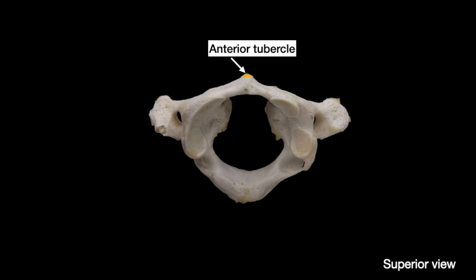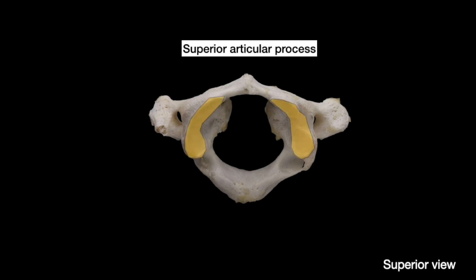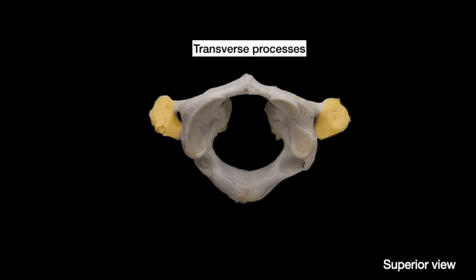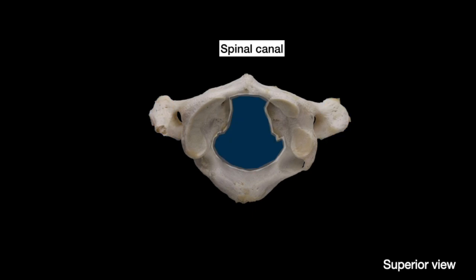The most anterior part of the anterior arch is called the anterior tubercle, and in the posterior arch it is called the posterior tubercle. The superior articular processes, which articulate with the occipital condyles, are also seen at the top of the lateral masses. Lateral to the lateral masses are the transverse foramina where the vertebral artery passes, and lateral to them are the transverse processes. In the middle of C1 is a large canal called the spinal canal, where the C2 odontoid process and spinal cord pass.